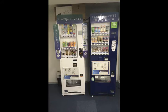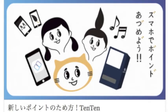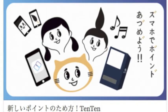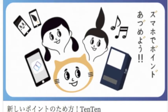So you buy something from the vending machine and you get points. What do you do with the points? You exchange them for all kinds of things — from iTunes songs on the Apple Store to games, as well as Amazon gift certificates in 500 yen, 750 yen, or 1,000 yen denominations.